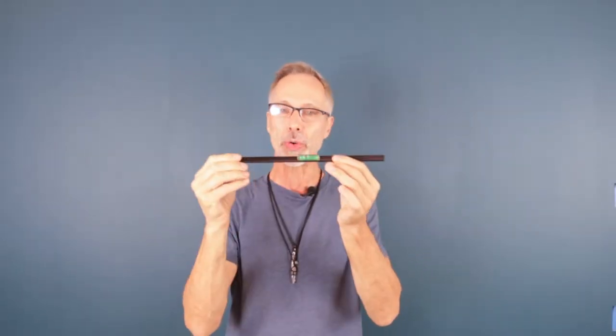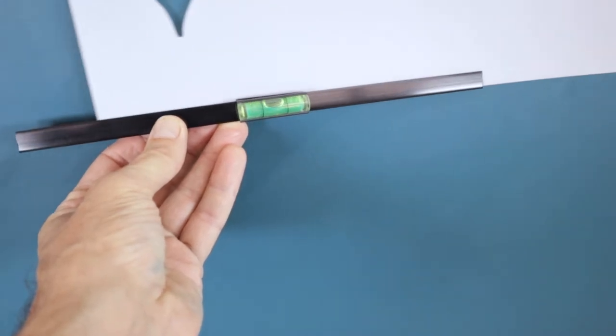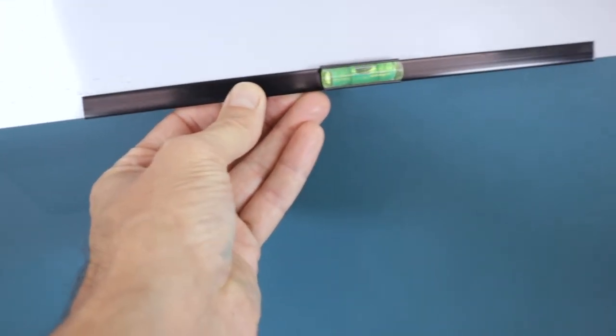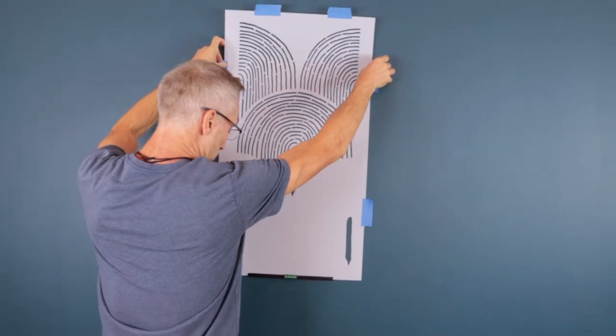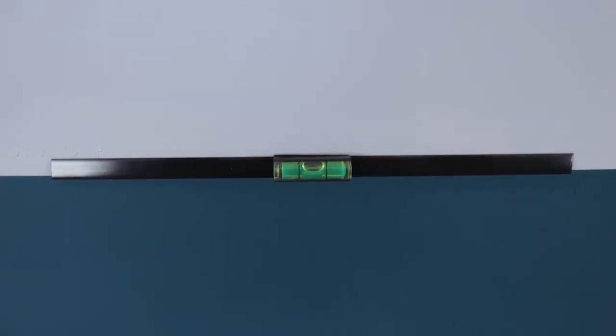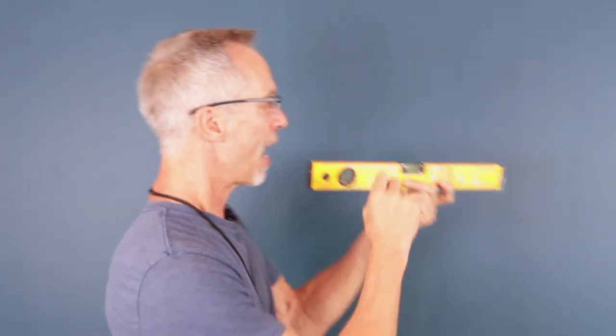You clip this on to the bottom of your stencil, and now by eye you can quickly and effectively level your stencil. This way we don't have to use things like bubble levels and pencils and chalk lines. That's over now.